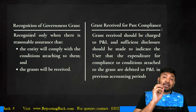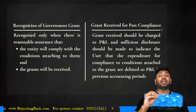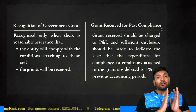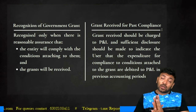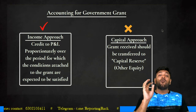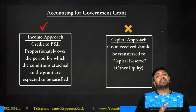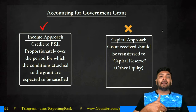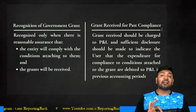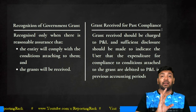However, when crediting the past-compliance grant to P&L, you must also disclose that the expenditure to comply with the grant conditions was already met in the past and was already debited to P&L. This is still the income approach — conditions are already satisfied, so directly credit P&L, but disclose that the related expenditure was debited to P&L earlier.